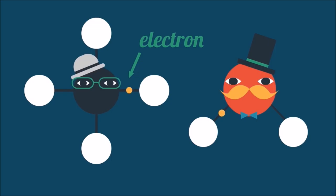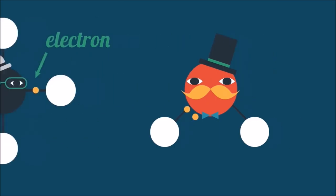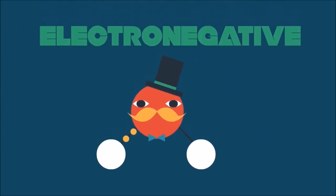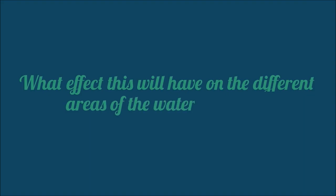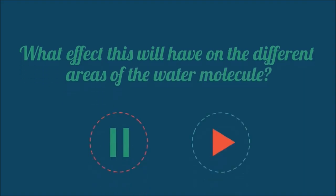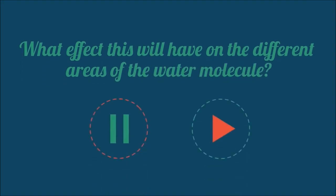But in water, the bonding electrons spend most of their time nearer the oxygen atom because it is more electronegative—that's electron withdrawing. What effect do you suppose this will have on the different areas of a water molecule? Pause the video and resume when you have an idea.